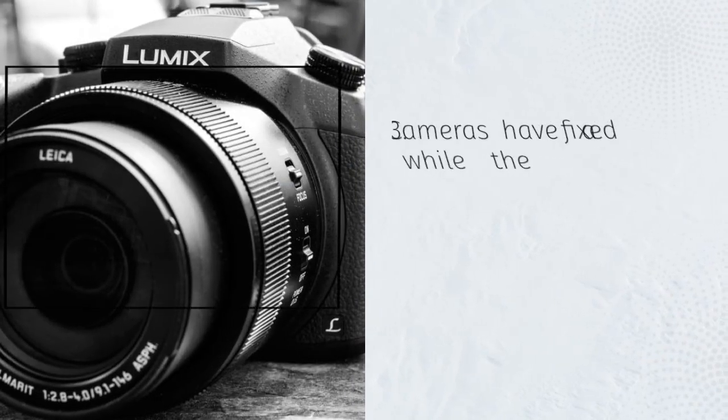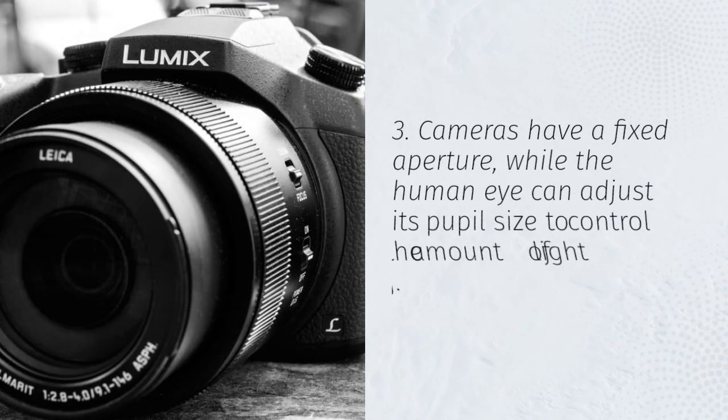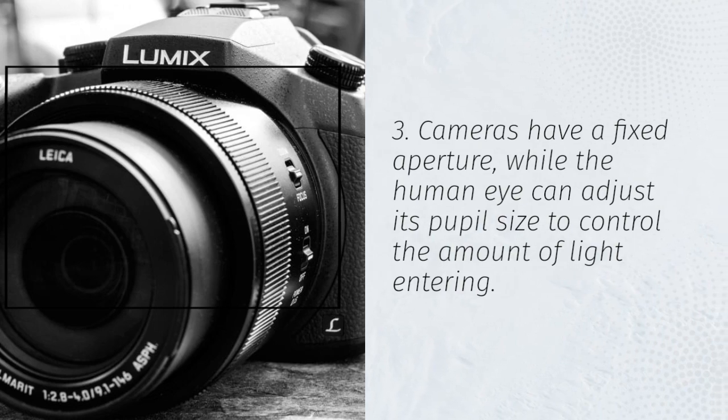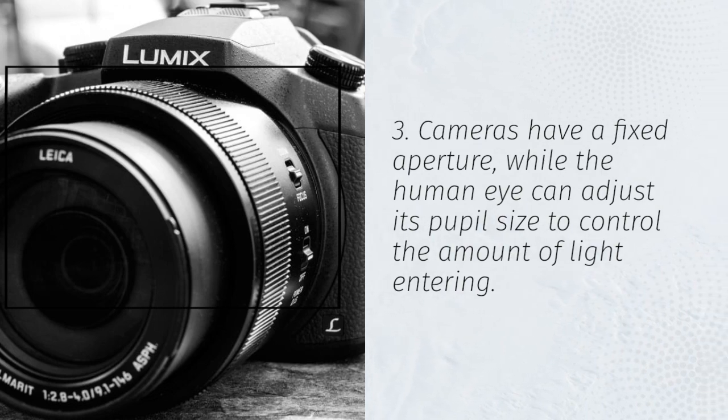Cameras have a fixed aperture, while the human eye can adjust its pupil size to control the amount of light entering.